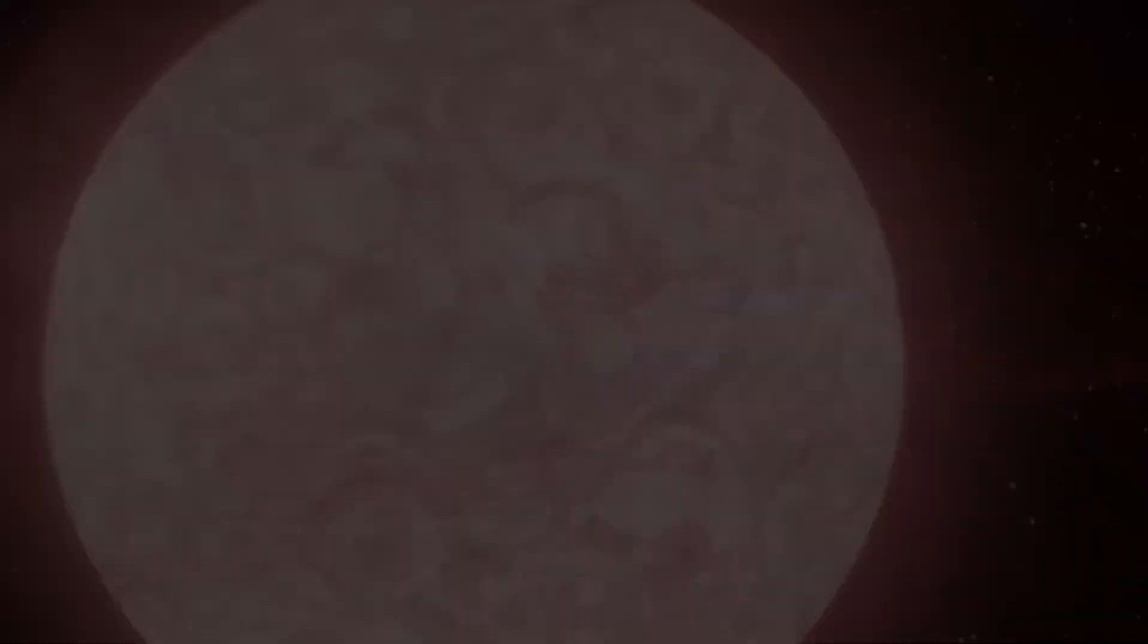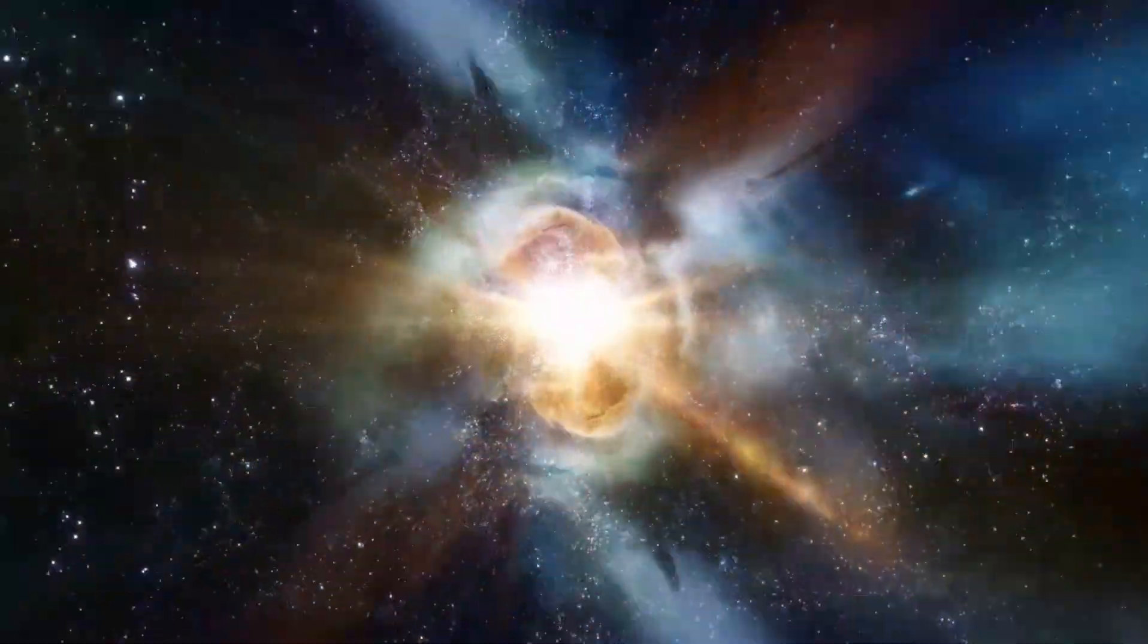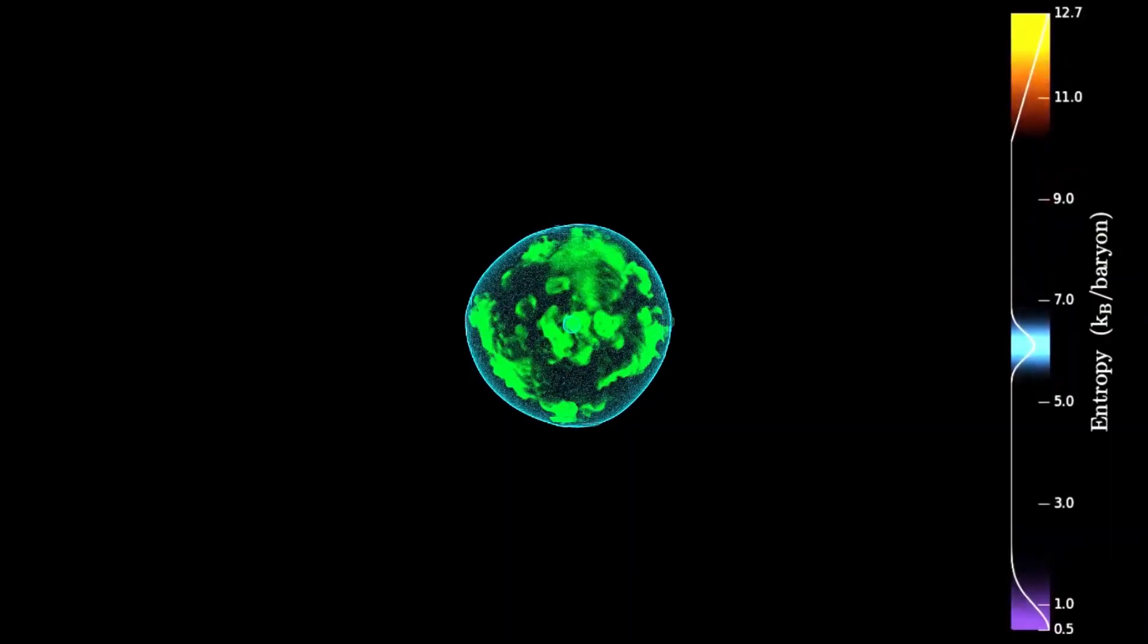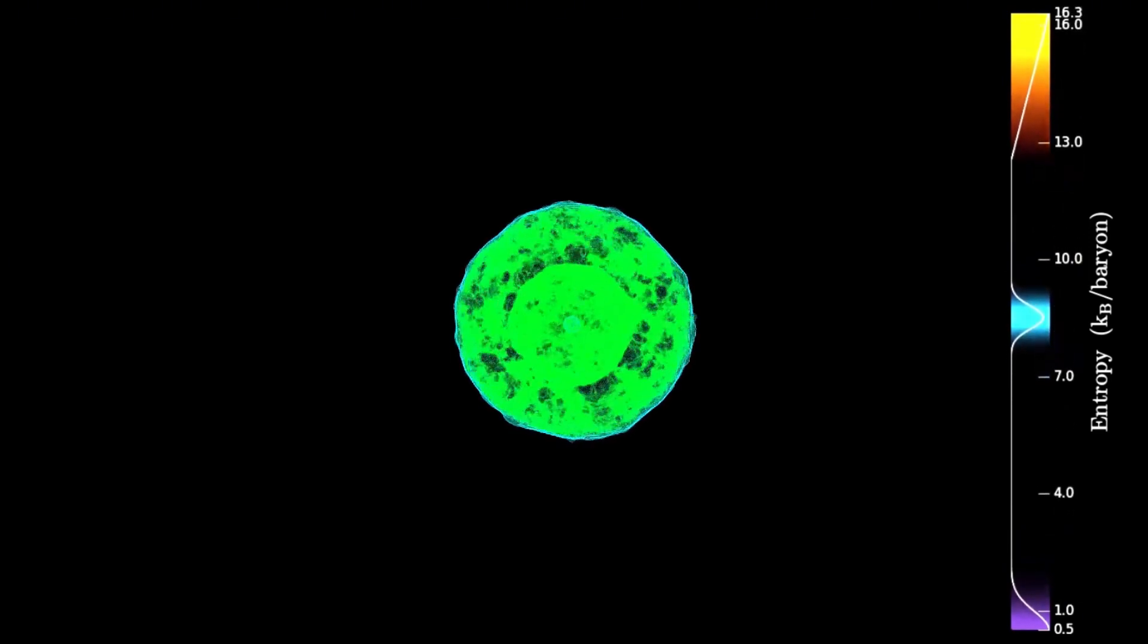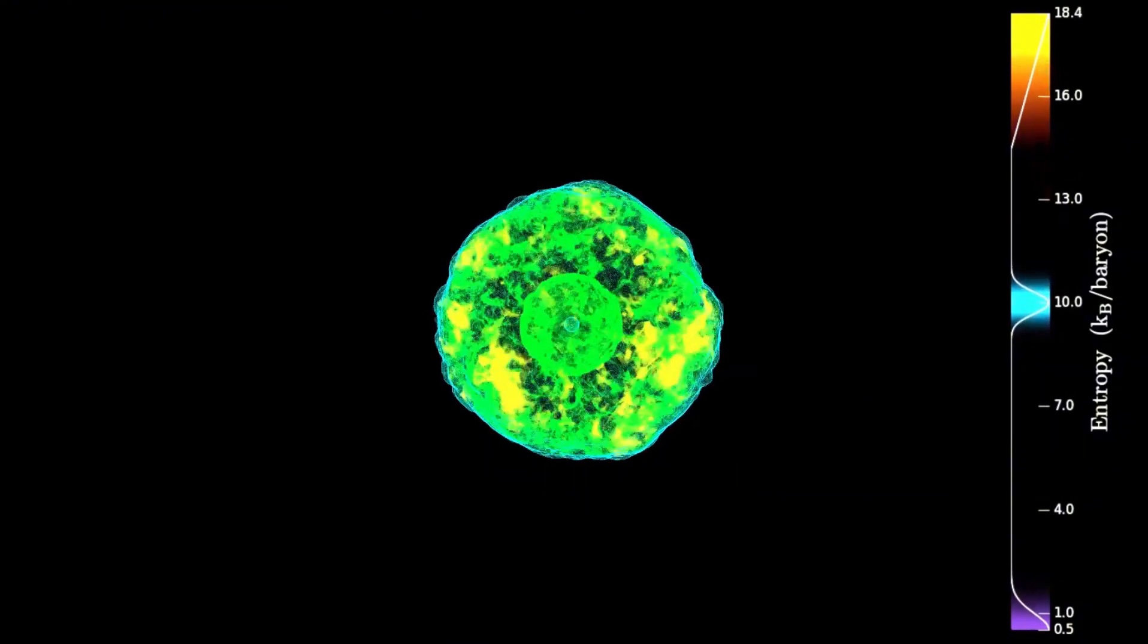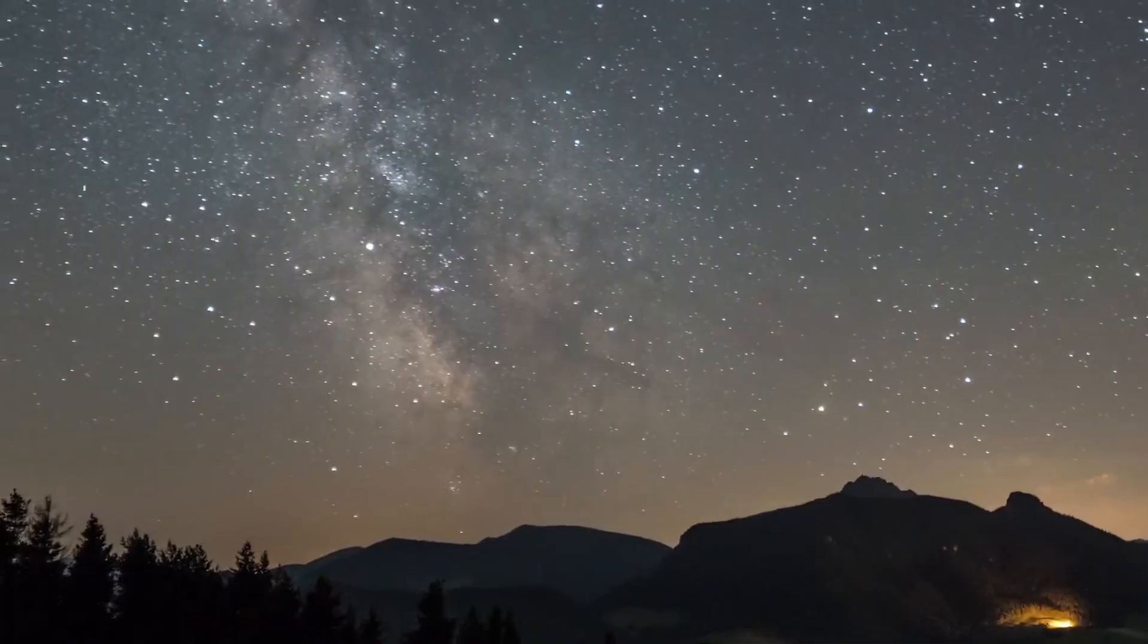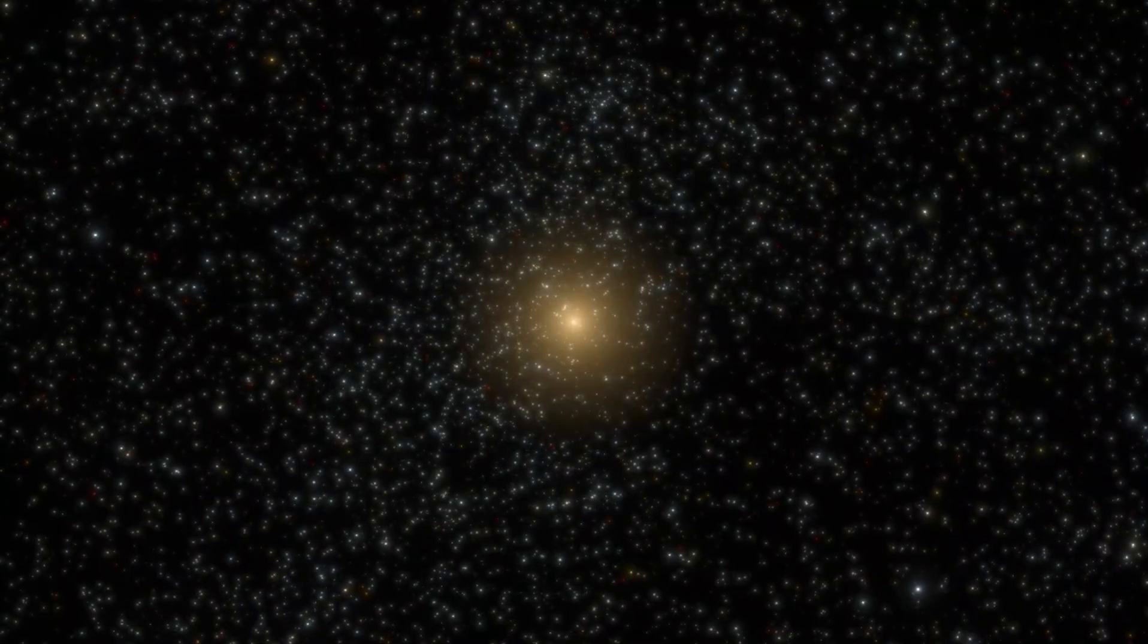One theory to explain this anomaly is stellar cannibalism, where Betelgeuse might have absorbed a companion star, gaining additional angular momentum in the process. Betelgeuse contains far more nitrogen in its outer atmosphere, which is a sign that its interior has been mixed recently, indicating that something happened to the star to spin it up. Putting these pieces together, astronomers recently performed a systematic and careful analysis of the intriguing possibility that Betelgeuse did not start off as a single star, but is instead the product of a collision.